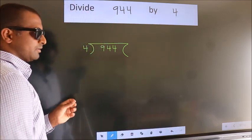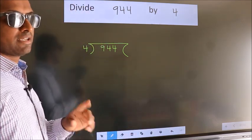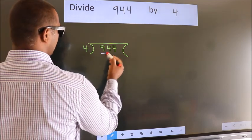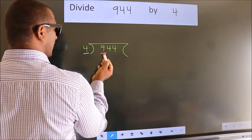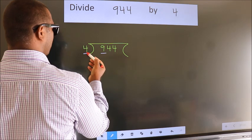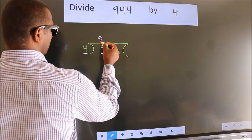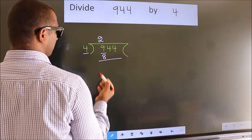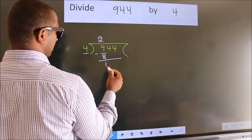This is step 1. Next, here we have 9, here 4. A number close to 9 in the 4 table is 4 twos, 8. Now we should subtract. We get 1.